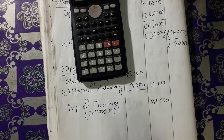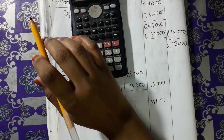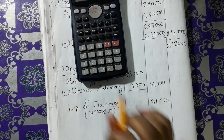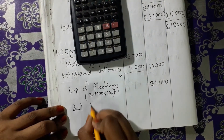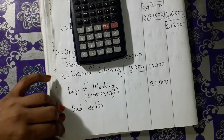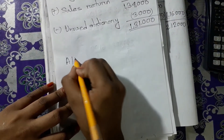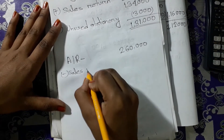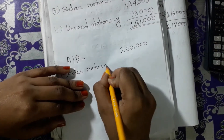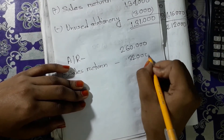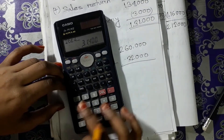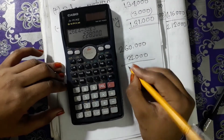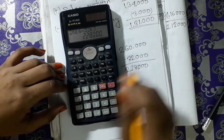What we need to record: first, stationery expense. Then depreciation on machinery. Then bad debt expense on accounts receivable. Also, accounts receivable adjustments. And finally, sales returns.